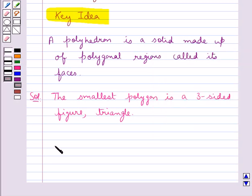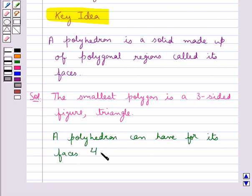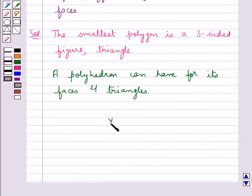So we say that a polyhedron can have for its faces four triangles. Our final answer is yes.